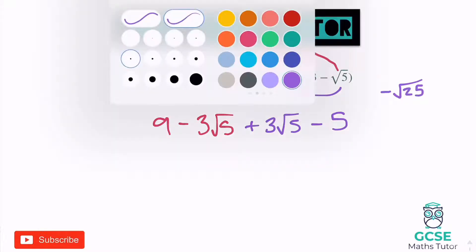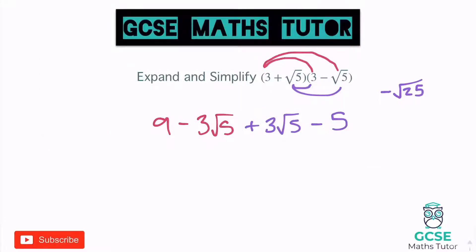Now we just need to collect these pieces together. I've got the one at the front and the one at the end, so 9 take away 5, which is 4. And I've got these two root terms in the middle — negative 3 root 5 and positive 3 root 5 — and they just cancel each other out. Adding negative 3 lots of root 5 and 3 lots of root 5 gets you to 0. So my final answer is 4.